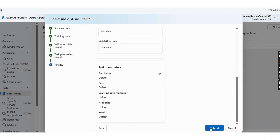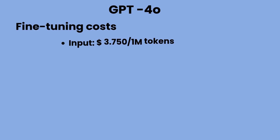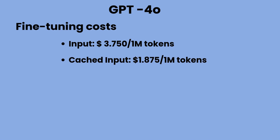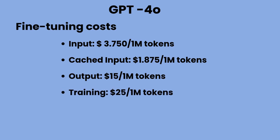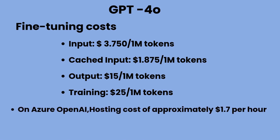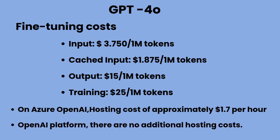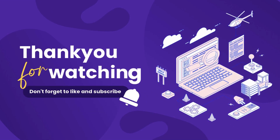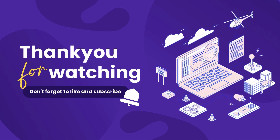Another option available for fine-tuning is supervised fine-tuning, which can also be used to enhance the model's performance. In OpenAI's GPT-4o, the fine-tuning costs are as follows: input is $3.75 per 1 million tokens, cached input is $1.875 per 1 million tokens, output is $15 per 1 million tokens, and training is $25 per 1 million tokens. If you choose to fine-tune on Azure OpenAI, there is an additional hosting cost of approximately $1.7 per hour. However, on the OpenAI platform, there are no additional hosting costs. Thank you for tuning in — let us know in the comments if there's a paper or topic you'd like us to explore next.